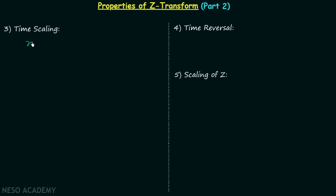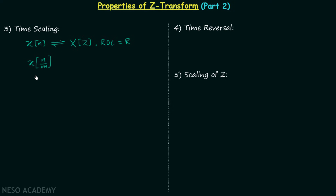Let's say there is a discrete time signal X(n) and the corresponding Z transform of this signal is equal to X(z), with region of convergence equal to R. I will first give you the property and then we will prove it. If we perform time scaling on signal X(n), we get a new signal X(n/m). This property is for time expansion only.